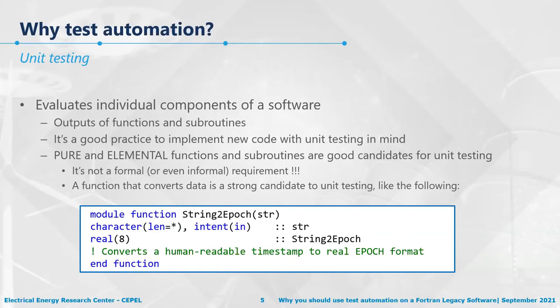Take this example: a function that converts a timestamp in human-readable format to a real epoch format. Functions that convert data in general are strong candidates for testing. This function is not strictly pure because it relies on some global data like the computer's time, but in general it's mostly pure. This is the kind of function that works well with unit testing.